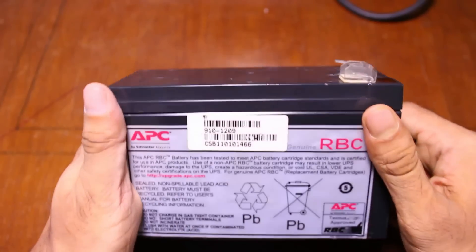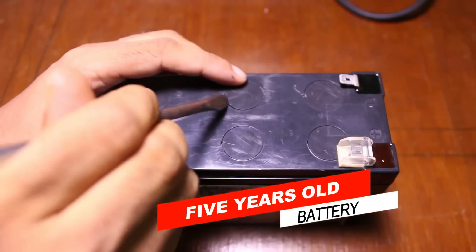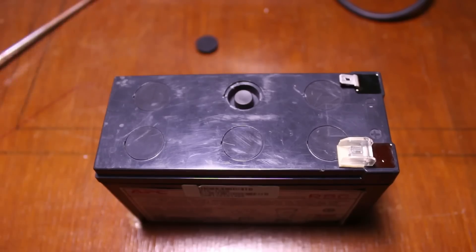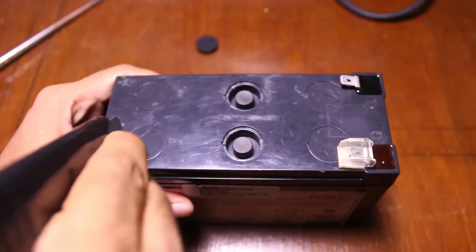So this is the battery and it is APC battery and it is now about five years old. I just took a screwdriver and opened the cap over this battery. There are six caps or six cells.